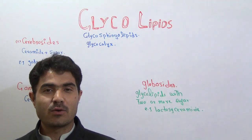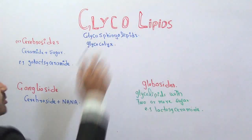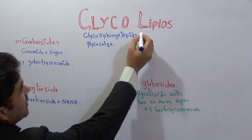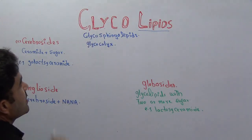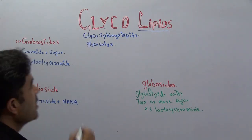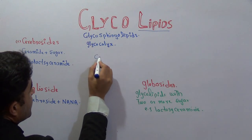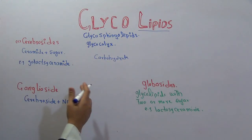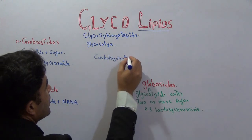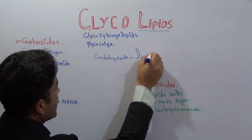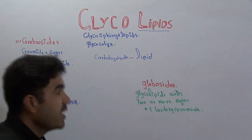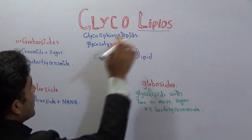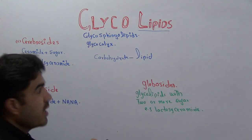Let's begin with glycolipids. The name simply tells us that it is a kind of complex lipid — meaning the lipid is being combined with 'glyco,' which means carbohydrate. So any carbohydrate, any sugar — whether it is a derivative sugar, monosaccharide, or disaccharide — if it is linked with lipid, that will be called a glycolipid. Glycolipids are also called glycosphingolipids.